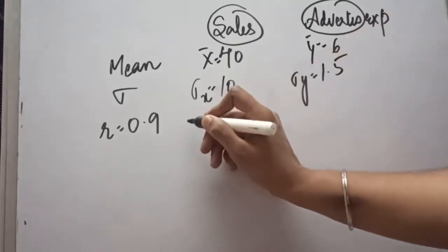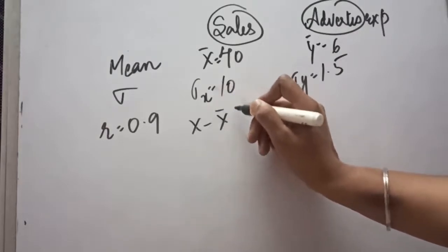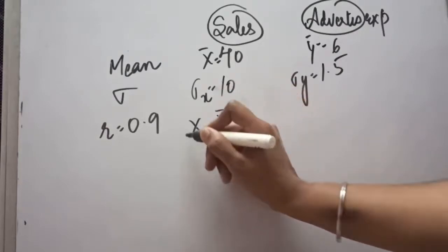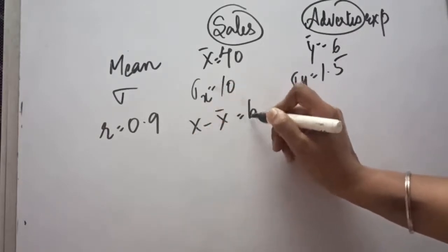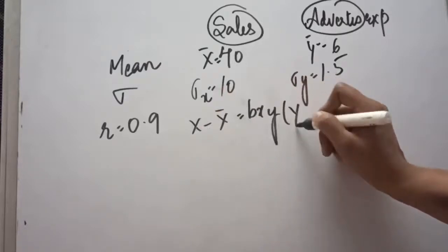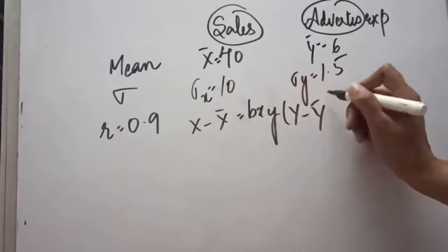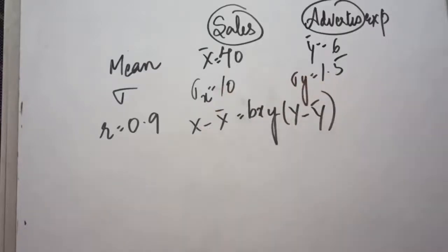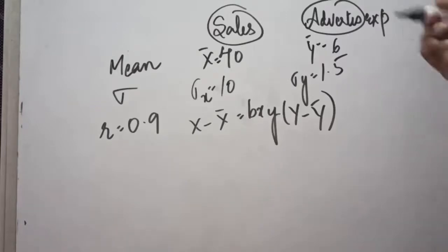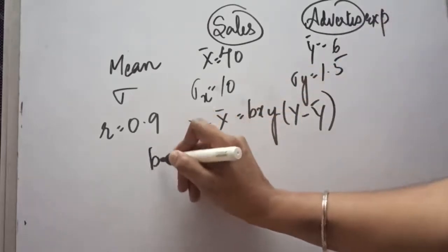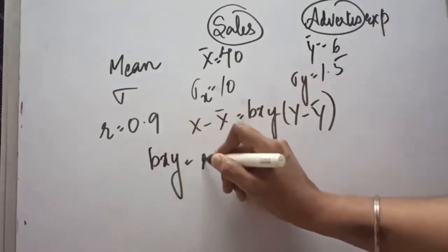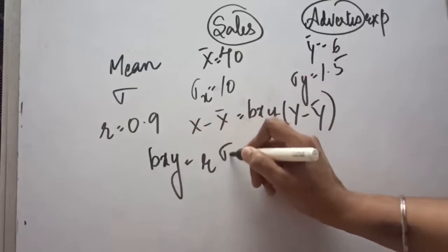We have seen that in the case of the x on y equation, we have to apply the formula: x minus x mean equals bxy times (y minus y mean). For y on x, it is the other way around. First of all, we will calculate bxy with the help of this formula.